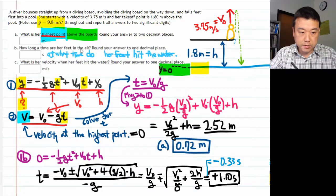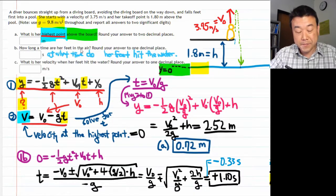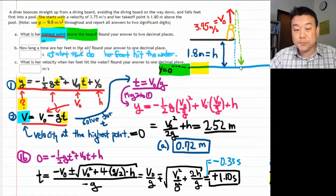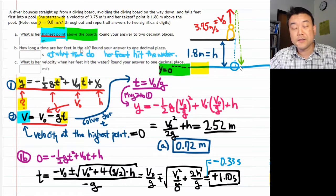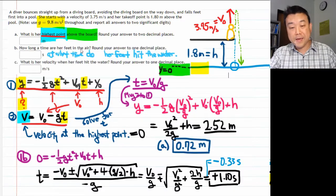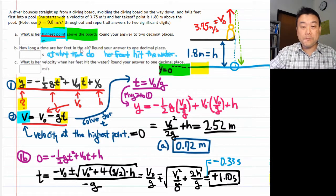It's clear the answer to pick is plus 1.10 seconds. But get into the habit of making sense of even the answer you're discarding. The negative answer reflects this: equation one describes motion for all time, not just the actual trajectory. It represents the hypothetical moment when the diver could have come out of the water at enough speed to reach the diving board at time equals zero. That didn't actually happen — so the correct answer for part B is 1.10 seconds.